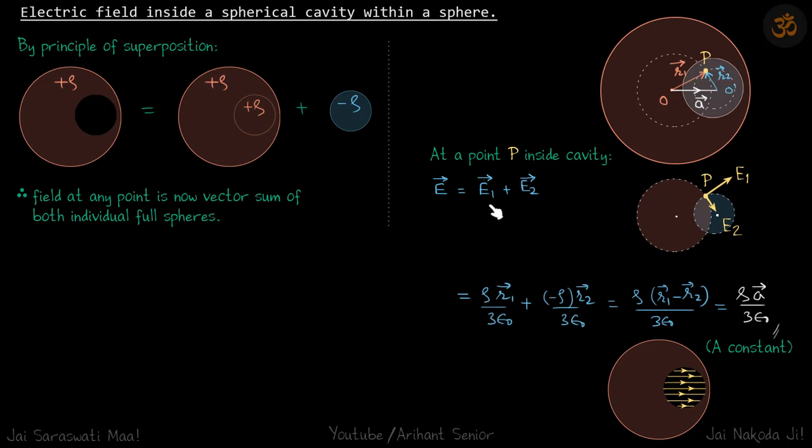So E is equal to E₁ plus E₂ vector. Now because we are only considering the inside part of this whole sphere, we know that for that the electric field is ρr/3ε₀, a standard result for field inside a solid sphere.